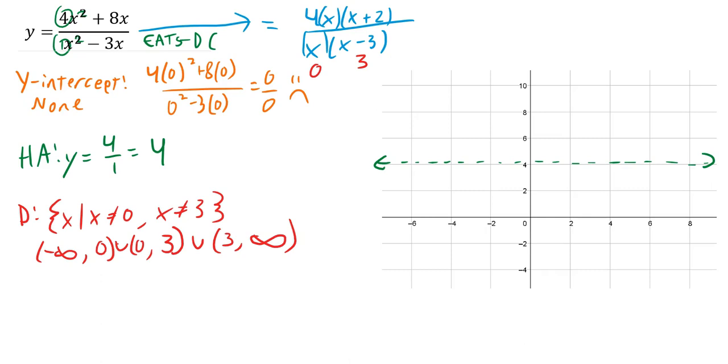Then I cancel. The x and x cancel, leaving 4 times (x plus 2) over (x minus 3).